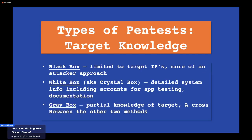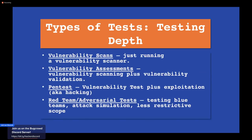Gray box is the most common — partial knowledge of the target. It's a cross between black box and white box. You'll typically get IPs and URLs but not necessarily accounts — a little more information than black box but not the full extent of white box. All these types of testing are important, and a lot of it is dictated by the amount of time you have. A malicious actor has all the time in the world, which is one of the limitations a pen tester faces.